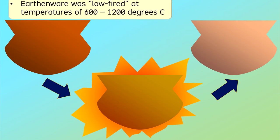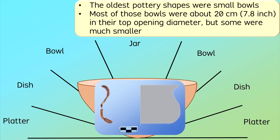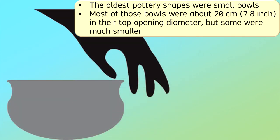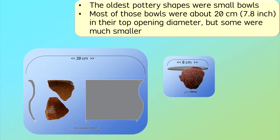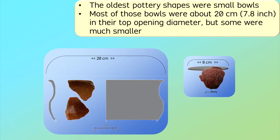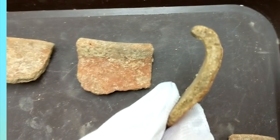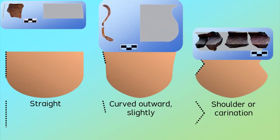The oldest pottery shapes could be described as small bowls. The top openings mostly were about 20 centimeters in diameter, but some were much smaller. These sizes were suitable for individual people to use, whereas larger pots would have suggested group usage. When looking at the profile shapes, the pottery bowls have shown variations of straight-sided, slightly out-curved, and carinated forms.